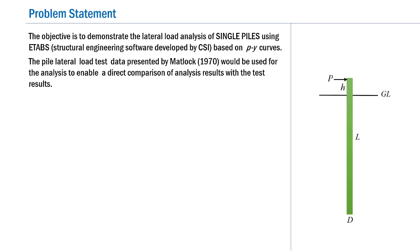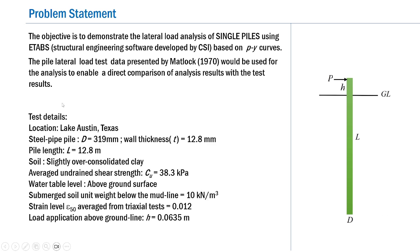So let us discuss about the test details. The pile lateral load test is done at a location, Lacoste in Texas. The steel pipe pile is of diameter d equal to 319 mm with a wall thickness t of 12.8 mm. The pile length L, measured from the ground level to the pile tip, is equal to 12.8 meters. The soil at the test site is a slightly over-consolidated clay with an averaged undrained shear strength found to be uniform across the depth; CU is equal to 38.3 kilopascals.